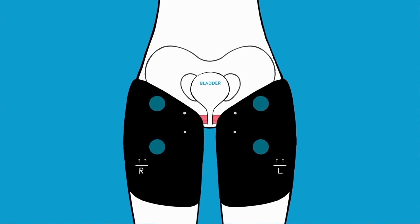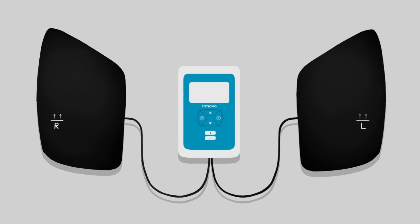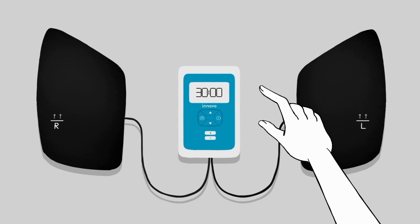Using a two-part garment that wraps around your upper thighs, it sends targeted impulses via conductive pads to safely and effectively activate the muscles of the entire pelvic floor. A handheld controller delivers the impulses causing 180 perfect contractions in every 30-minute session.